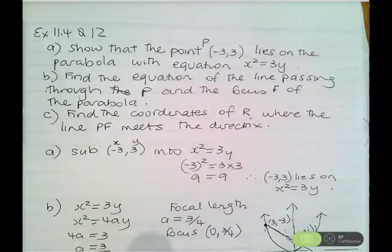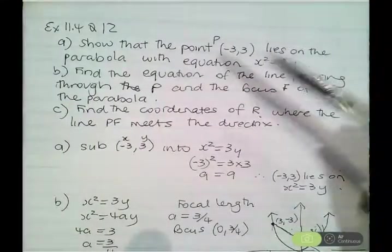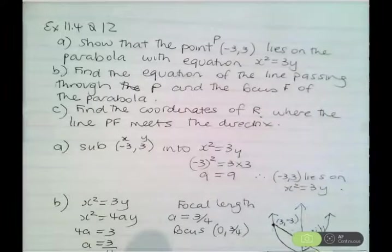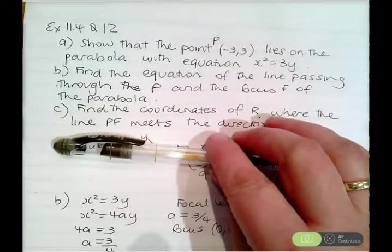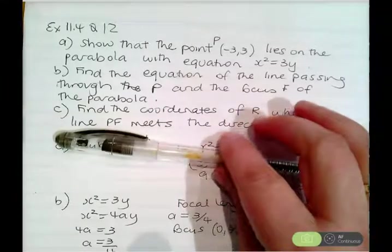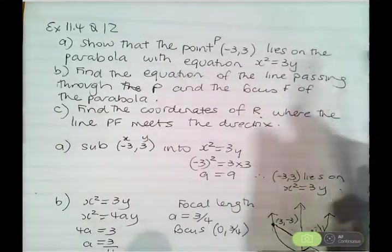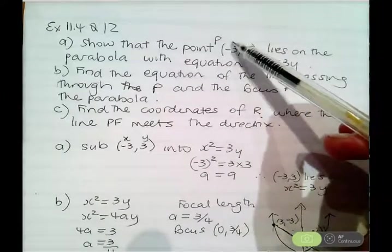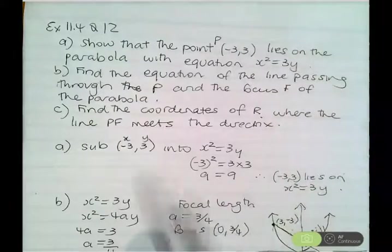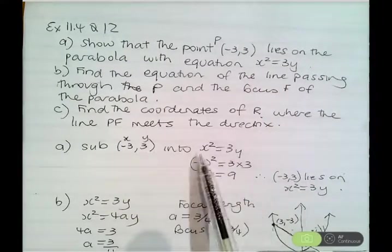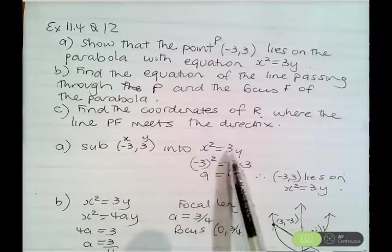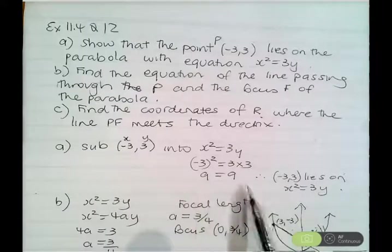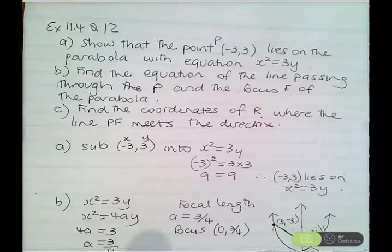Exercise 11.4, question 12, homework problems. The first part says show that the point (negative 3, 3) lies on the parabola with equation x squared equals 4ay. To show a point lies on any equation, substitute its x and y values: negative 3 squared is 9, and 3 times 3 is also 9, so the left-hand side equals the right-hand side, confirming (negative 3, 3) lies on the parabola.